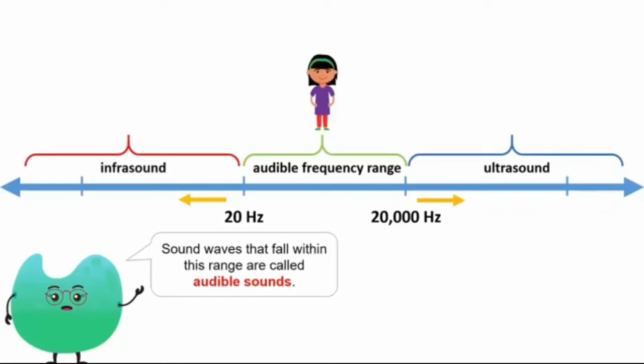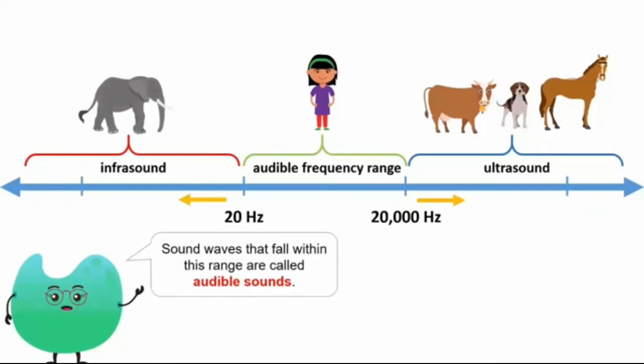Animals such as cow, dogs and horses can hear ultrasounds. A few animals such as elephants can also hear infrasound.